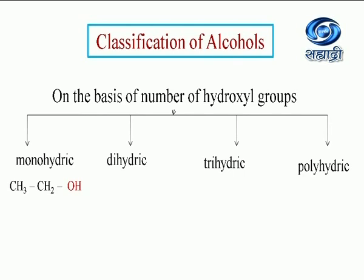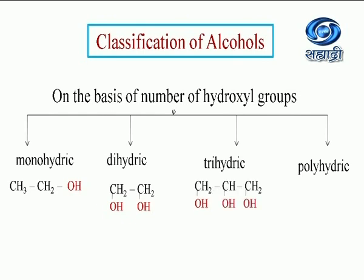For monohydric, there is only one OH group and the remaining part is an alkyl group, for example CH3CH2OH. For dihydric, two hydroxyl groups are present in the chain — they should be on adjacent or different carbon atoms, but never on the same carbon. For trihydric, propane has three H atoms replaced by three OH groups. For polyhydric, a compound with six carbon atoms has six OH groups replacing six hydrogens. So: one OH = monohydric, two OH = dihydric, three OH = trihydric, more than three = polyhydric.